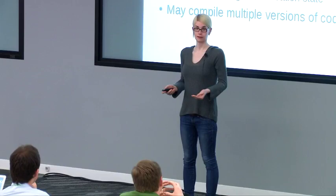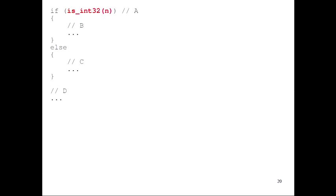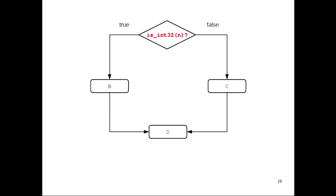As a simple example, if we had a little control flow graph with one conditional test A, and some blocks B, C, and D — in source code this would look like: say we're testing if n is an int32. If n is in fact an int32 and the test evaluates to true, then when we go to block B we know that n is int32. If it evaluates to false, inside block C we know n is not int32. But when we arrive at block D, we know that n is either int32 or not int32 — so we actually know nothing about n.